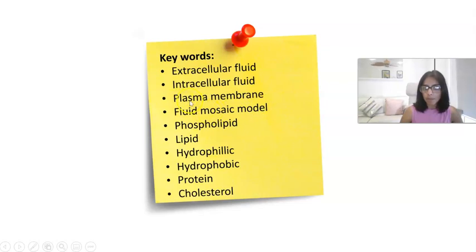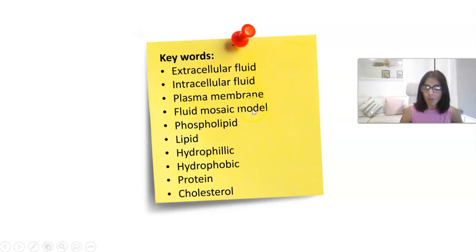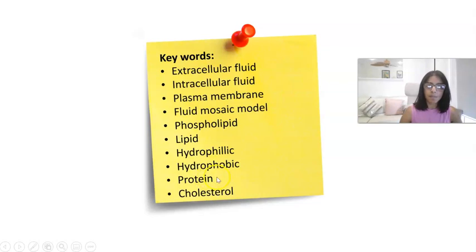Welcome back to Lesson 2 in Human Biology. Today we're going to be looking at the cell membrane. Here are some key words for today's lesson. The ones I want to really draw your attention to are the terms plasma membrane and fluid mosaic model.